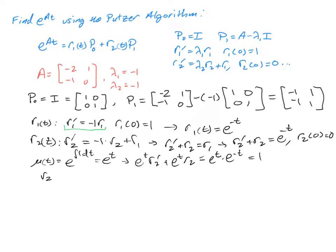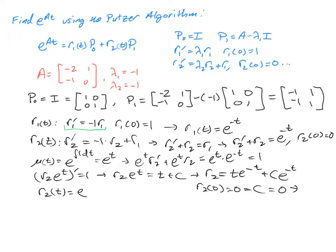So we've got R2 times E to the T prime is equal to 1. If we integrate that, we get R2 times E to the T equals T plus C. So R2 is equal to T E to the negative T plus C E to the negative T. And if R2 of 0 is equal to 0, that forces the C to be equal to 0 as well. So the R2 function here is just equal to T times E to the negative T.